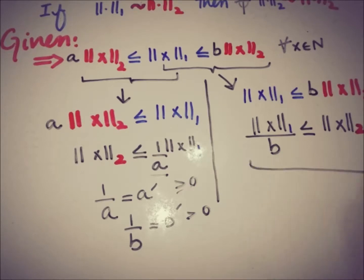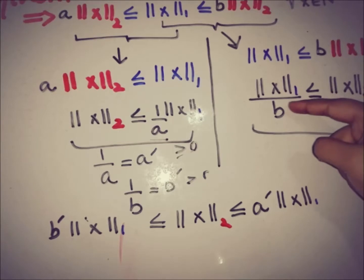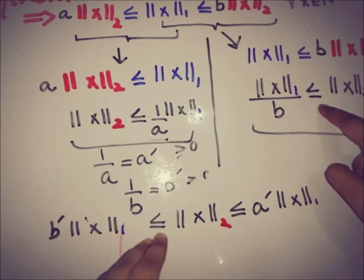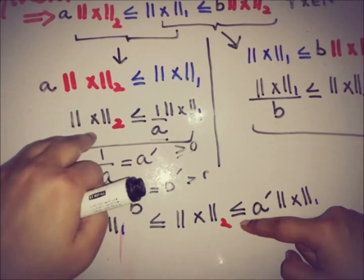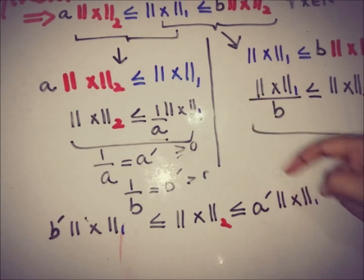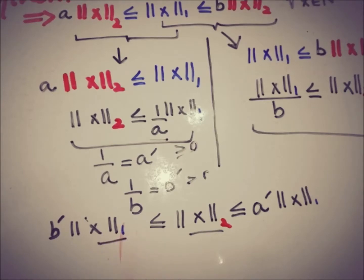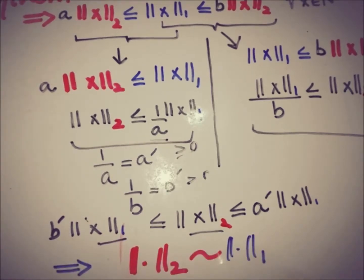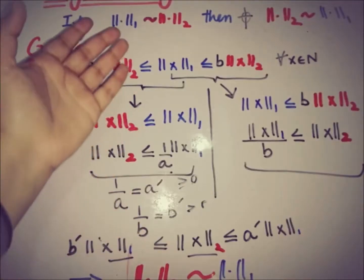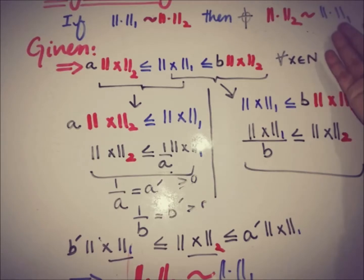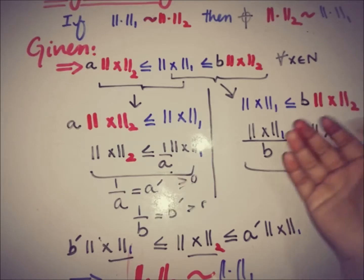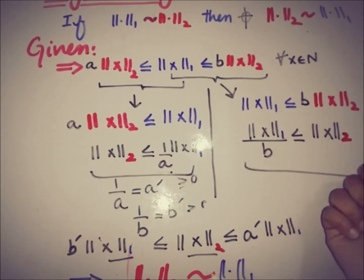Combining these, we can write: b'·‖x‖₁ ≤ ‖x‖₂ ≤ a'·‖x‖₁. This is exactly the condition for norm 2 to be equivalent to norm 1, which is our target. So if norm 1 is equivalent to norm 2, then norm 2 is equivalent to norm 1 — there is symmetry. Now moving toward the third property, transitivity.